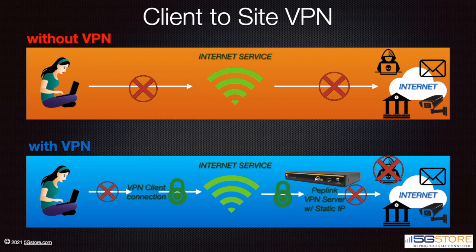Once we're connected to the VPN, any information that we send and receive through our laptop is going to be encapsulated and transmitted securely from the coffee shop Wi-Fi through the open internet and back to our Peplink router at home. This protects us from any potential threats on the coffee shop Wi-Fi network, and it also lets us access local devices on our Peplink router, such as security cameras or a hard drive, all as if we were connected directly to our home network.